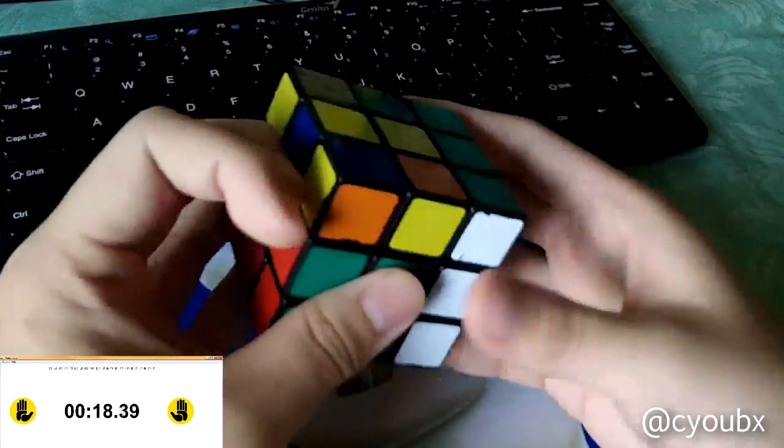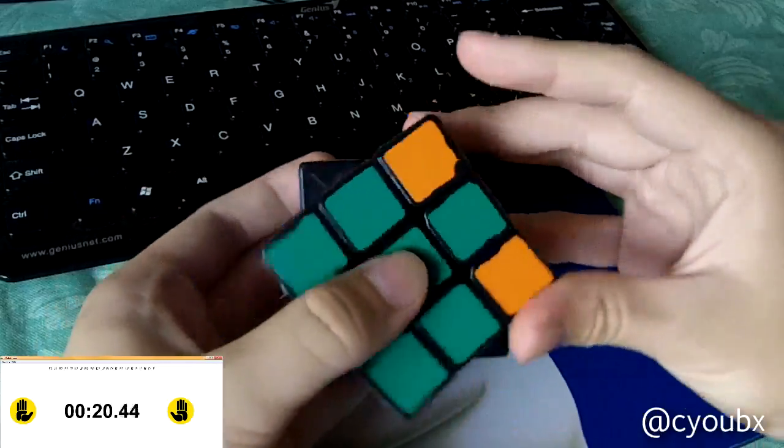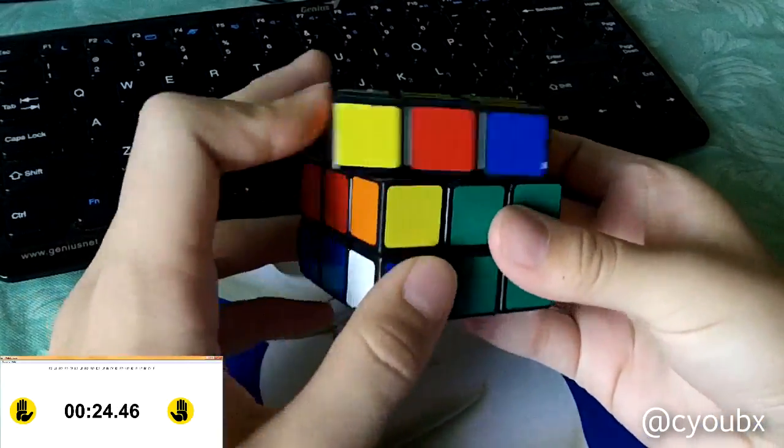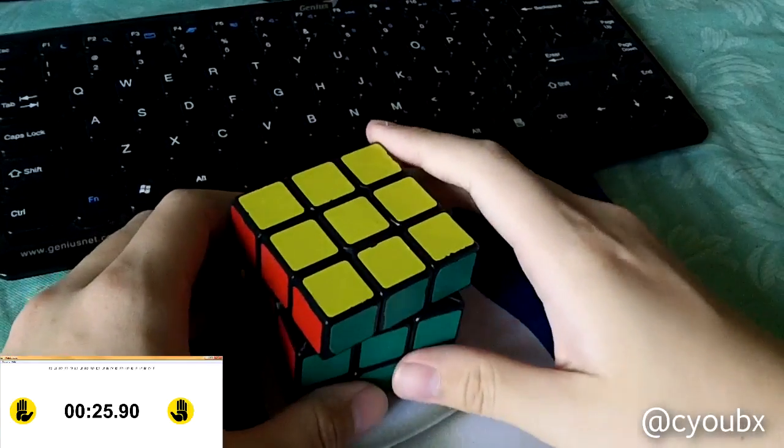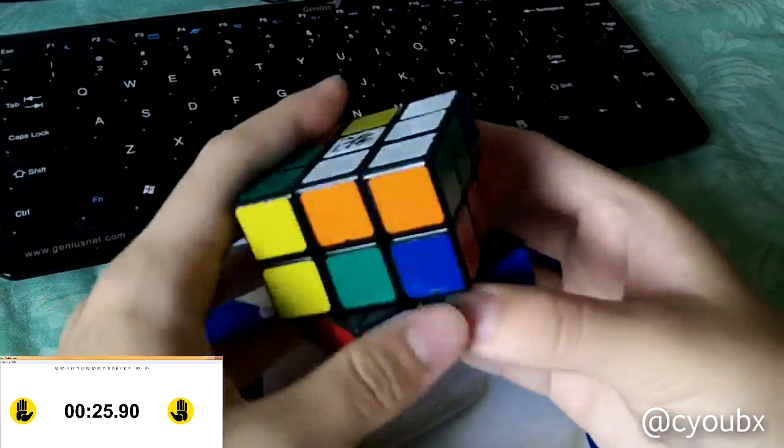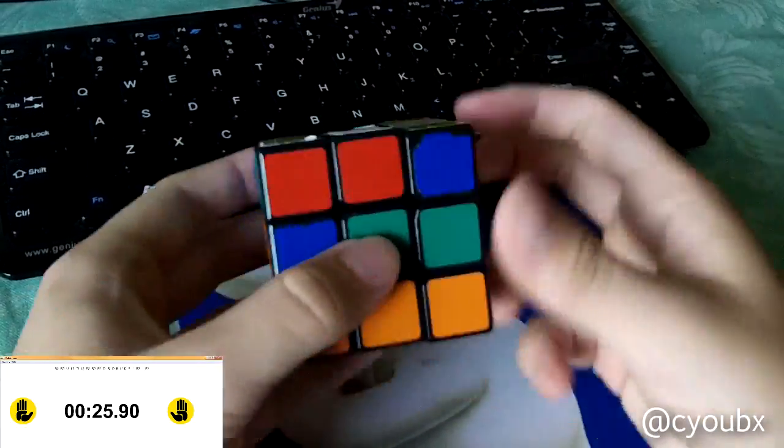Thus, if you're able to find the pieces instantly, you would be able to go from one F2L pair to the next without a single break, and look-ahead really wouldn't be needed. But because we are human and this instantaneous recognition is impossible, we do rely on look-ahead to resolve this issue.